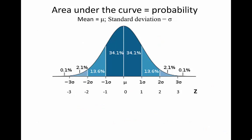If a population is normally distributed, we can use this knowledge to compute probabilities of finding scores in any particular range of interest. The population mean is indicated by the Greek letter mu, and the standard deviation is indicated by the Greek letter sigma. A z-score indicates the number of standard deviations that a score is above or below the mean. Most scores are within one standard deviation of the mean — 68.3% of the distribution is within one standard deviation of the mean, just over two-thirds.